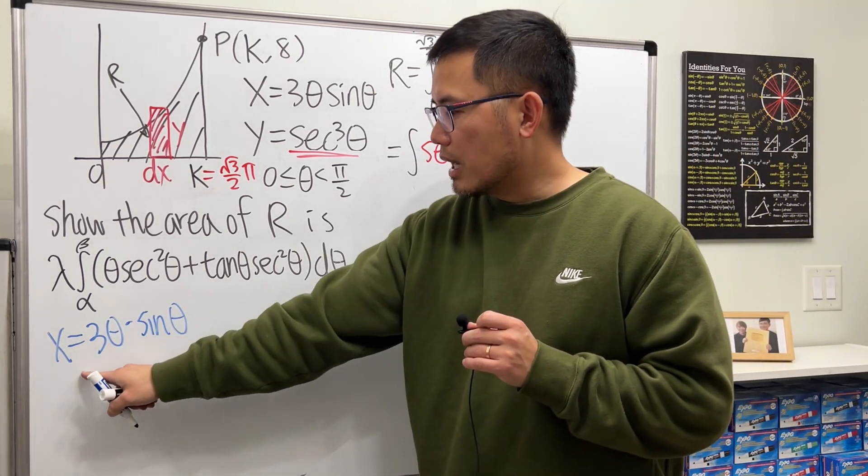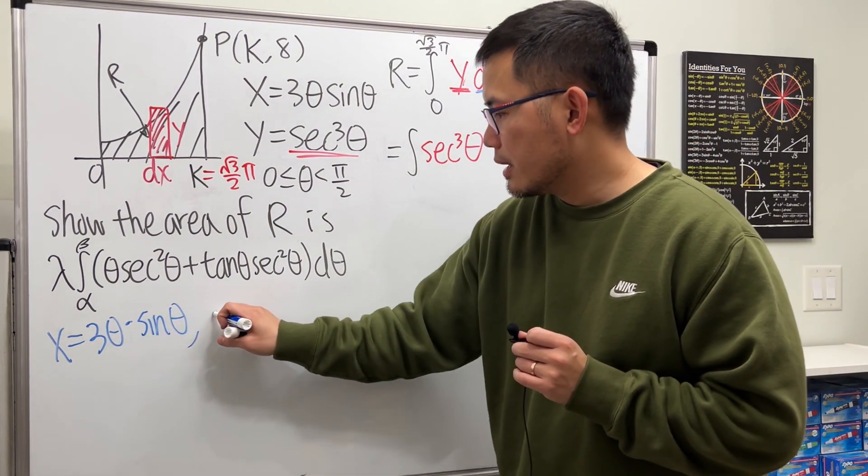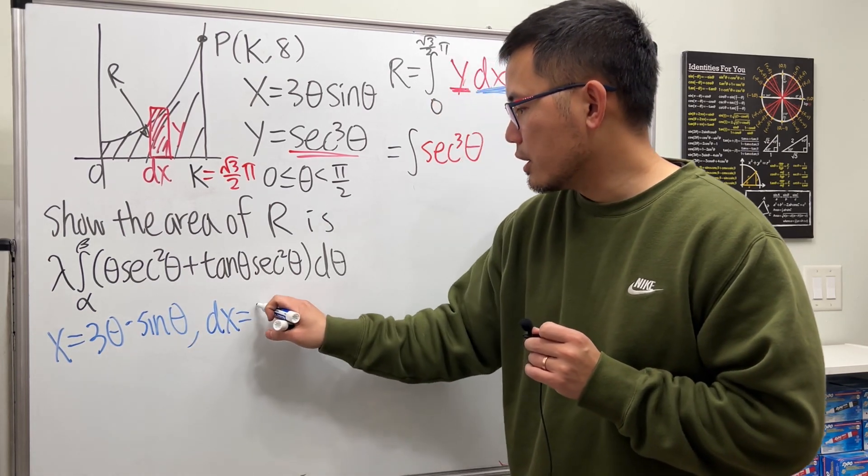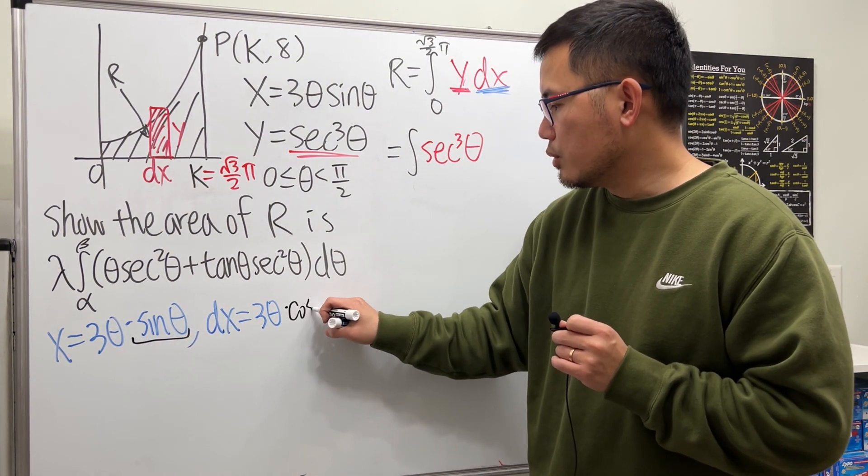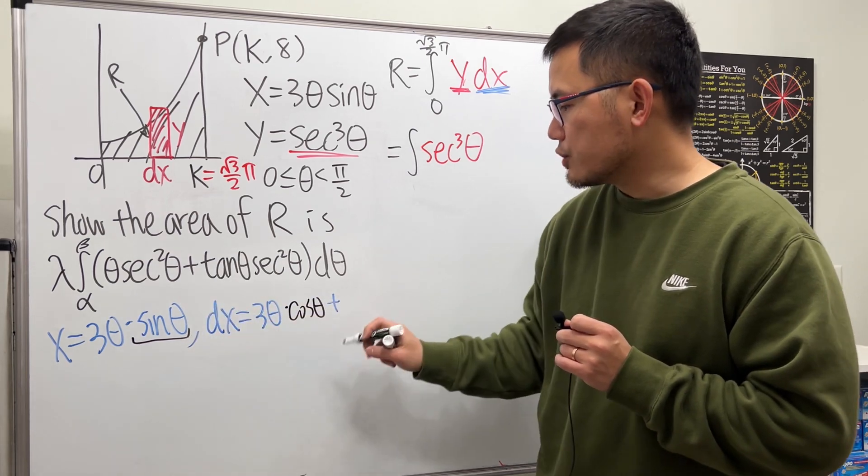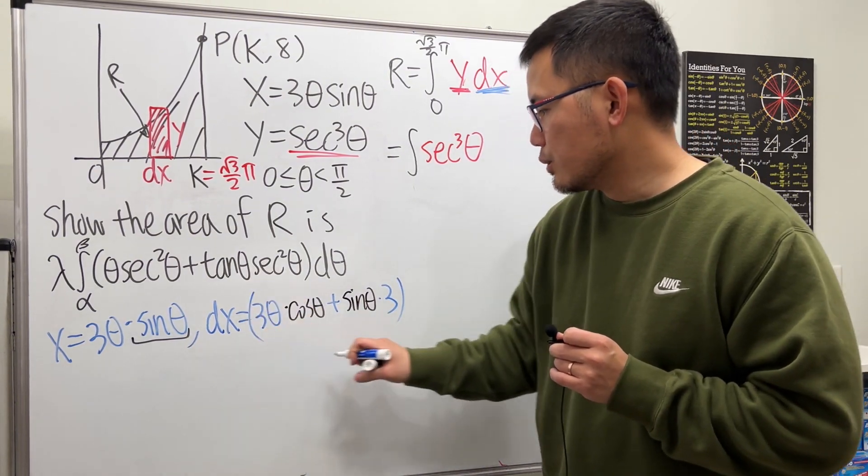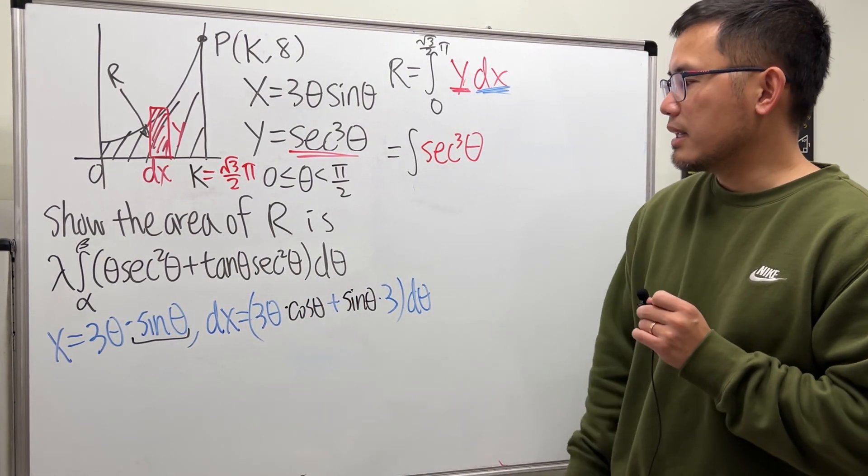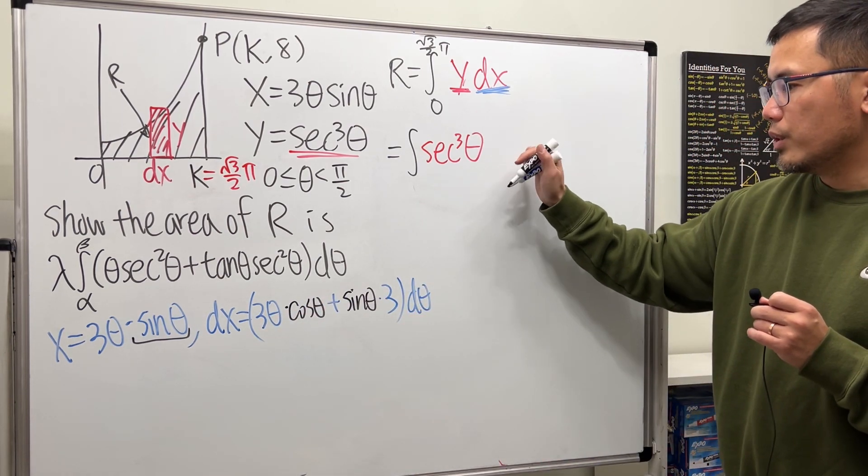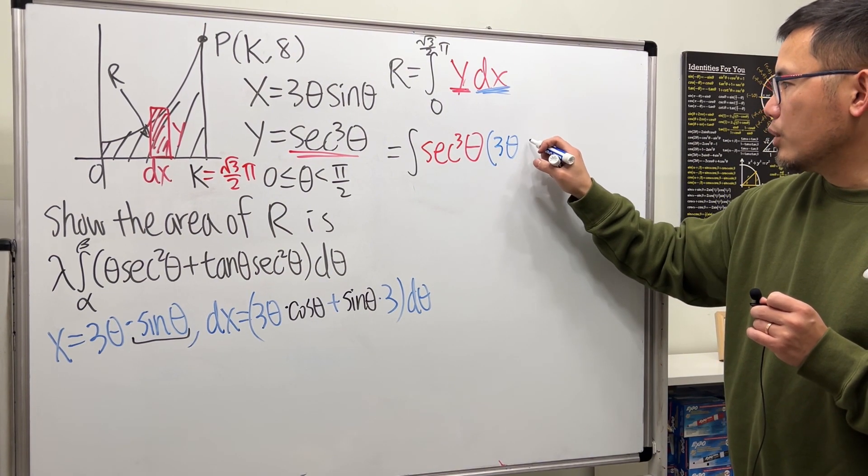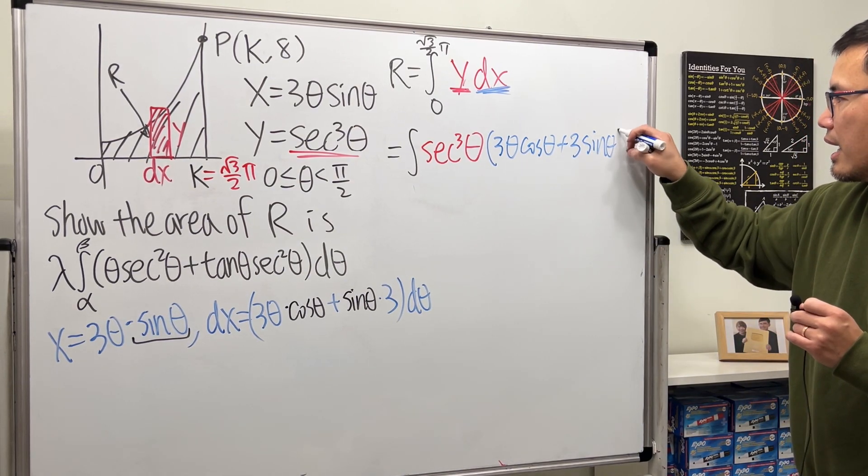For dx, we come here and differentiate both sides. This is the product of two functions, so use the product rule. dx equals: keep the first function 3θ times the derivative of the second which is cosθ, then add the second function sinθ times the derivative of the first which is 3, all with dθ.